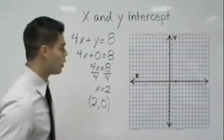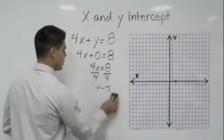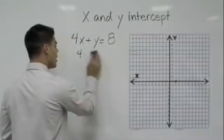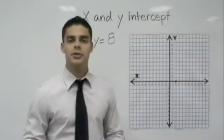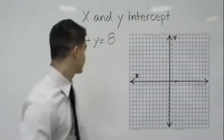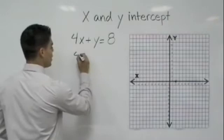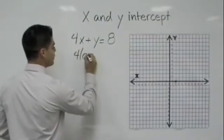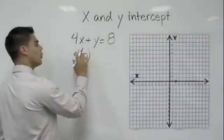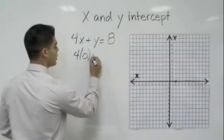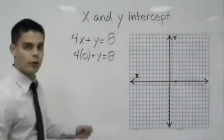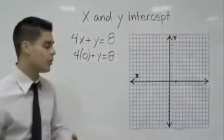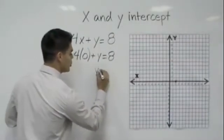Let's go ahead and do our y-intercept now. And again, when we find our y-intercept, what do we do? That's right, I hope you're saying substitute a 0 in for x. So I rewrite my equation and I put a 0 in for x. So 4 times x or 4 times 0 plus y is equal to 8. Now 4 times 0 is 0, so I'm just left with y is equal to 8.